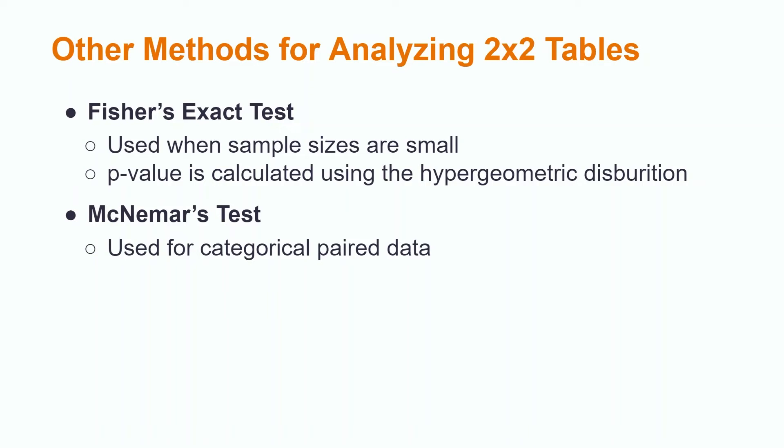The p-value for Fisher's Exact Test is found using a probability distribution known as the hypergeometric distribution. When we have paired data measured with a categorical response variable, we use McNemar's test. Paired data means that the two groups being measured come from the same sample. An example would be testing whether the proportion of college students who drop out is different after tuition rates are lowered.